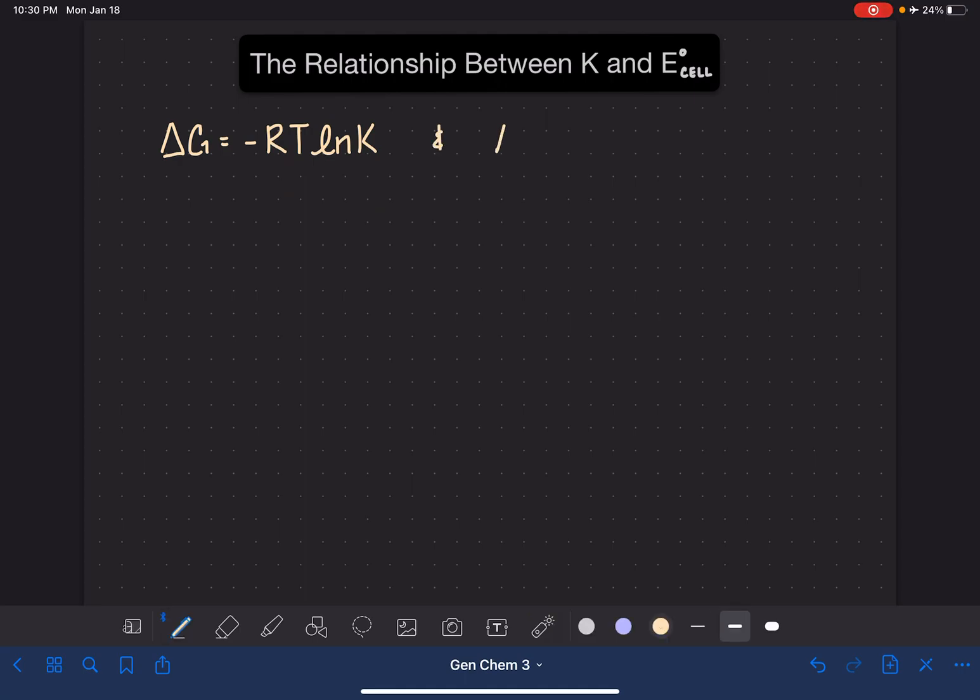We're also going to use an equation that we just learned. Delta G is negative NF E cell. And if we want, we can put some standard symbols on these different terms.